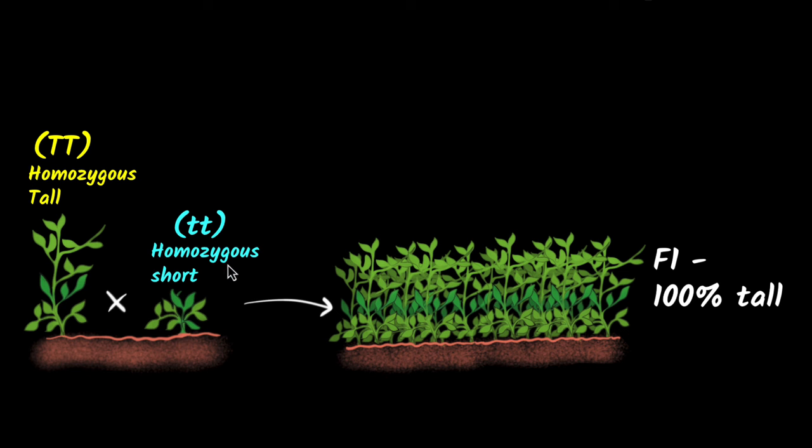And Mendel was shocked. How does that make any sense? Why is everything tall? So what's happening is that these plants are getting one copy of their gene from this plant, and another copy from this plant. And so if you look at their alleles, you will have one capital T, one small t.